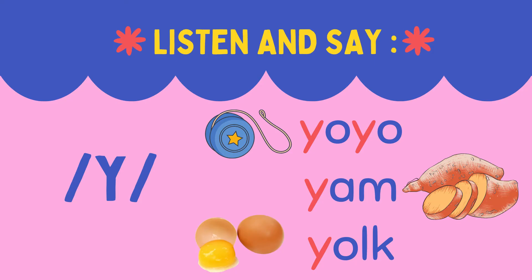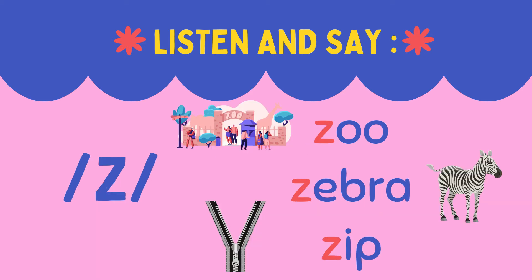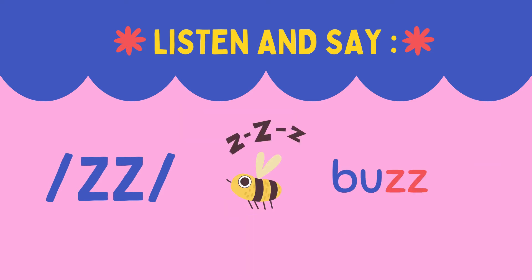Listen and say. Y sound: yo-yo, yam, yoke. Z sound: zoo, zebra, zip.